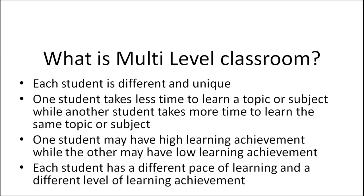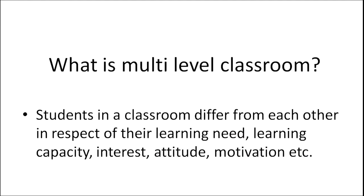Some students take less time to learn a topic while others take more time to learn the same topic. One student might have high learning achievement while others might have low learning achievement. Therefore each student has a different pace of learning and a different level of learning achievement. Students differ in their learning needs, learning capacity, interests, attitudes, and motivation.